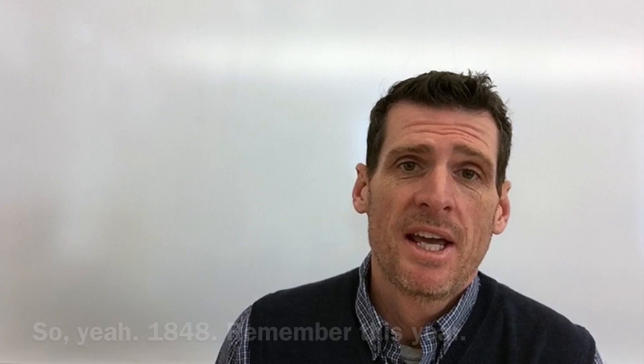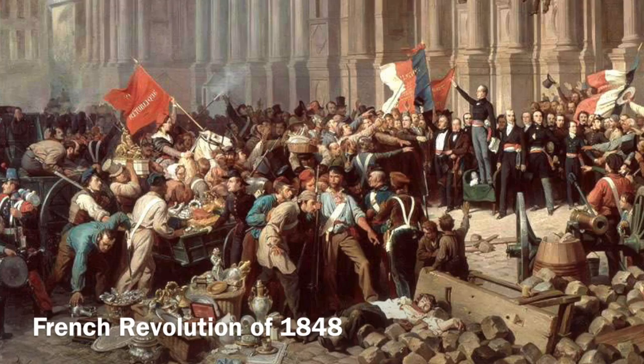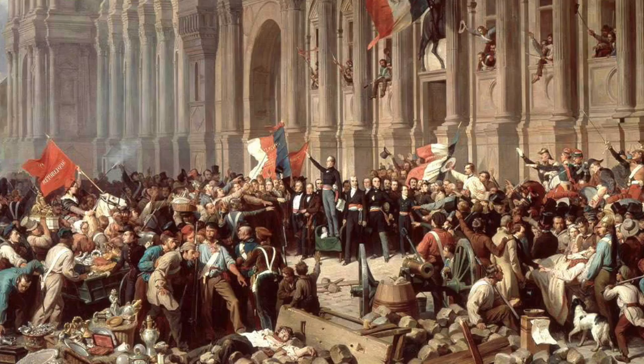Well in 1848 the saying had been going around that when France sneezes Europe catches cold. Keep that in mind. It really tells you what's going on. Like these things start in France and then everybody else kind of jumps in, which is what you saw in 1830. So in 1848 people are really unhappy with the rule of Louis Philippe and so they rise up against him and they force him to abdicate the throne and there's a period of shifting of power where they're messing around with maybe a republic maybe this maybe that I wouldn't worry about that.